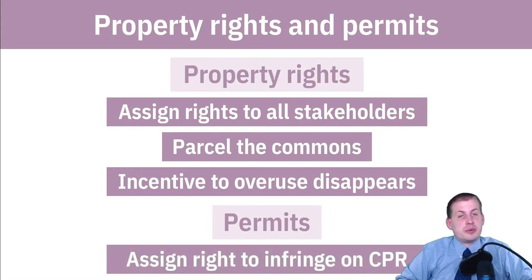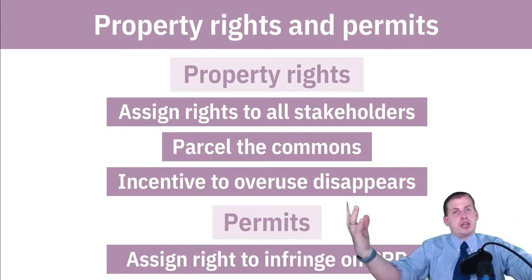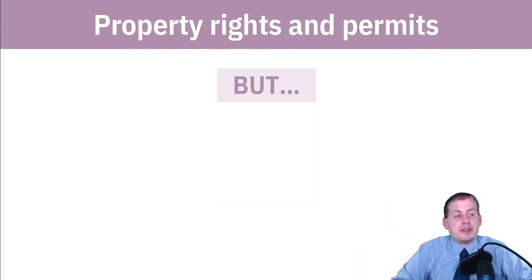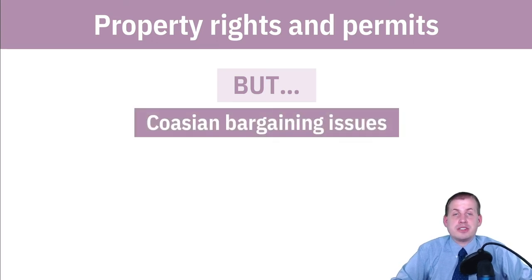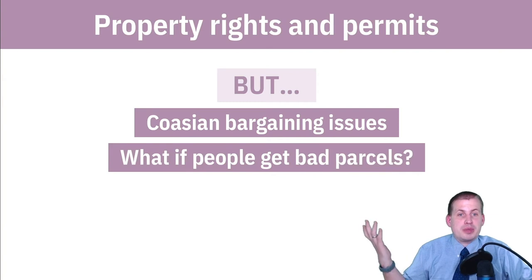Another alternative is the cap-and-trade system: you assign the right to infringe on the common pool resource and say pollution is acceptable at a certain level — you must buy a permit to pollute, essentially excluding people without one. However, Coasian bargaining is hard to do at a large scale. Excluding the commons means parceling it out and giving people property rights, which then requires everyone to negotiate for access.